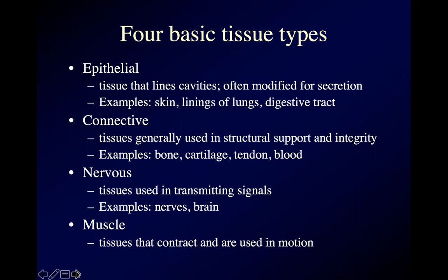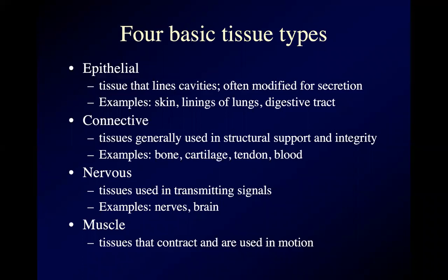Epithelial tissue can often be modified to secrete stuff. The salivary glands in your mouth are made of folded, modified epithelial tissue. You ever get your tongue in exactly the right position to cause a little spray of spit to come shooting out of your mouth? I had a friend in high school who could do that on command — he was using epithelial tissue modified for secretion. A lot of your liver and your pancreas and things like that are epithelial.